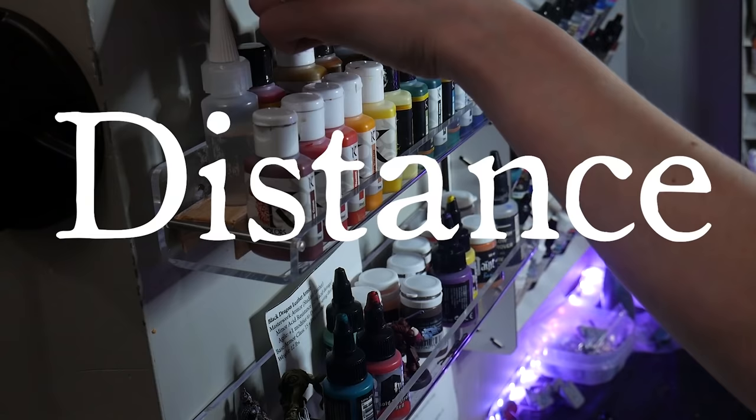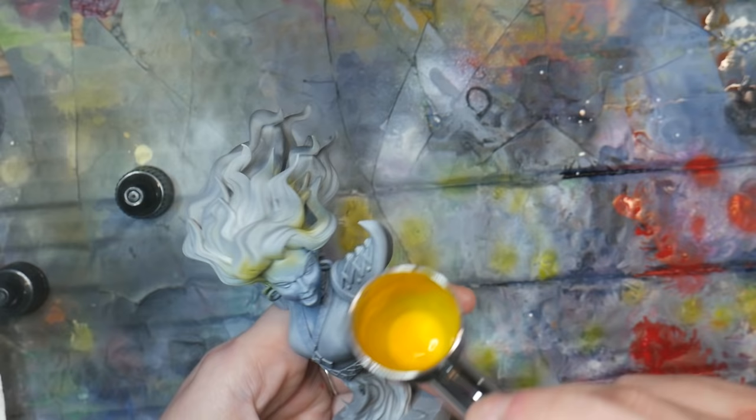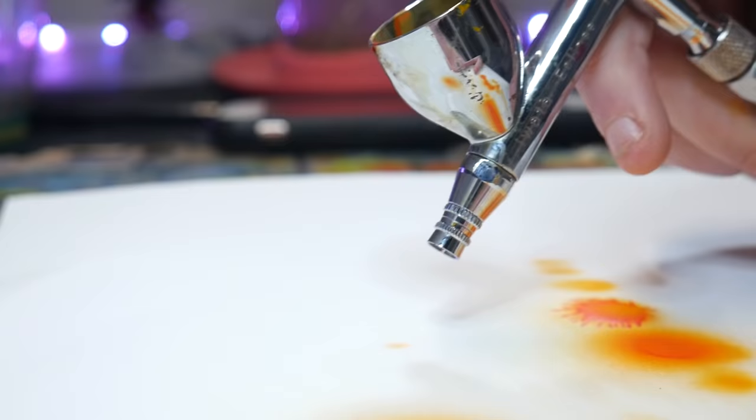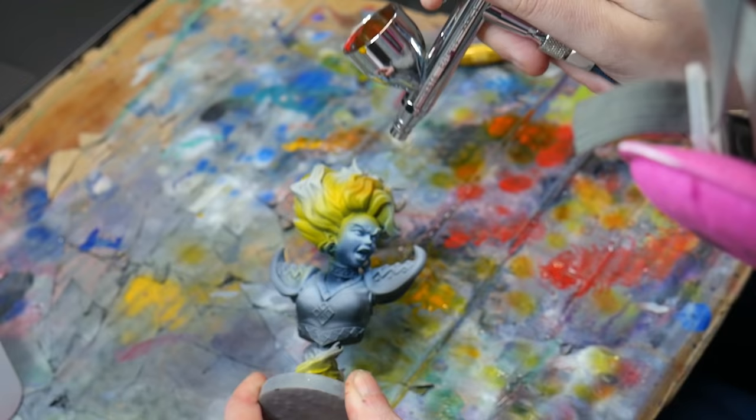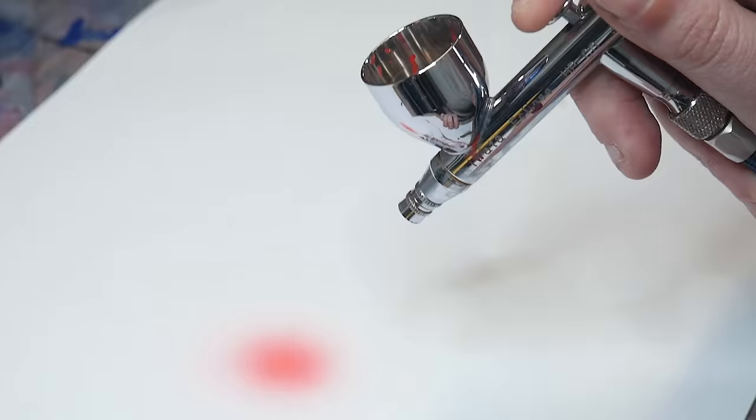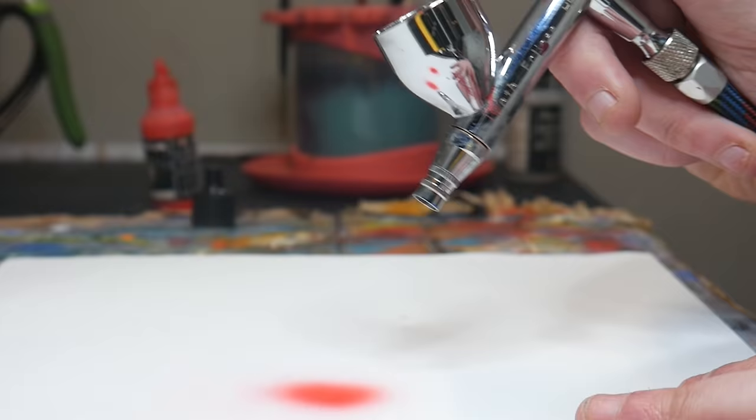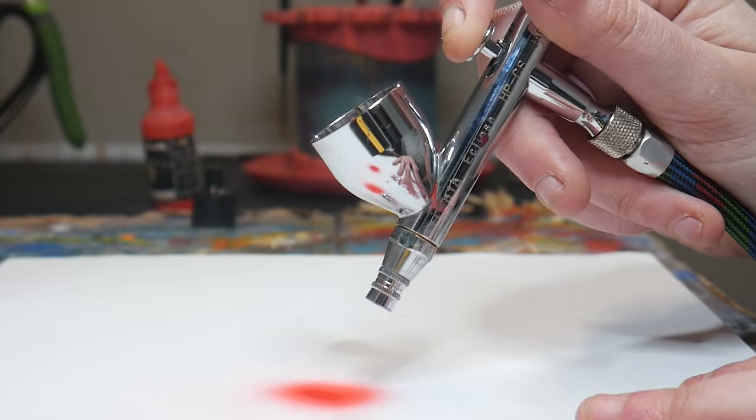Distance. The distance you hold your gun from your model will affect the size of your spray pattern. Closer the gun is to your subject, the tighter the spray will be. The further back, the larger the spray pattern will be. This works hand in hand with trigger pull. The closer you are to the subject, the less paint you will want to release from your gun. Pulling the trigger too far back while being very close to your subject will cause the paint to flood and splatter.